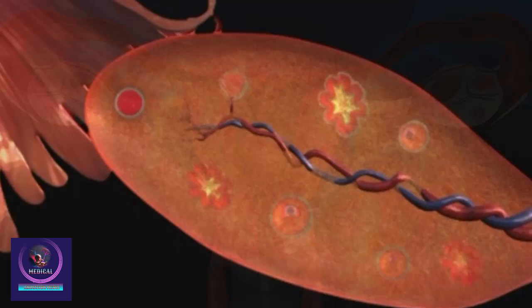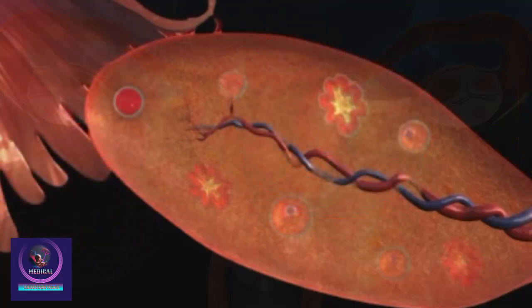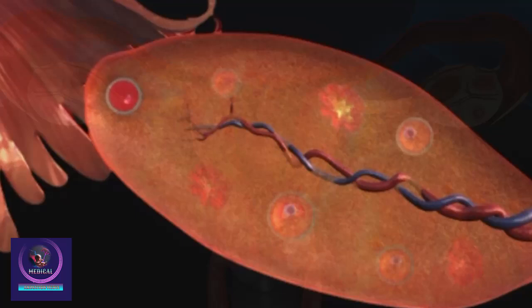The ovaries have two important jobs. They produce eggs and female hormones. Each ovary contains thousands of follicles, which contain the early stages of an egg plus layers of cells around it.